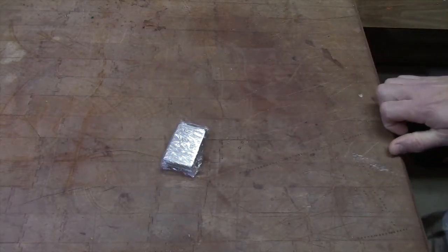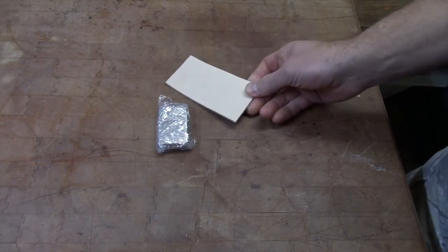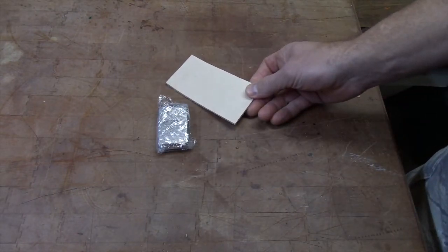We start by covering the lighter with plastic wrap and then taking this small piece of leather, dampen it, and get ready for the wet molding.